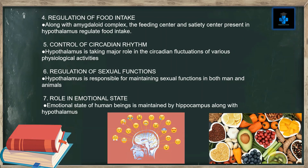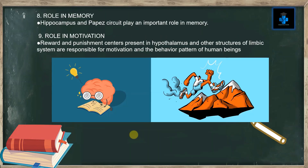Fifth, control of circadian rhythm — the hypothalamus plays a major role in the circadian fluctuations of various physiological activities. Sixth, regulation of sexual functions — the hypothalamus is responsible for maintaining sexual functions in both humans and animals. Seventh, role in emotional state — the emotional state of human beings is maintained by the hippocampus along with the hypothalamus. Eighth, role in memory — the hippocampus and Papez circuit play an important role in memory.